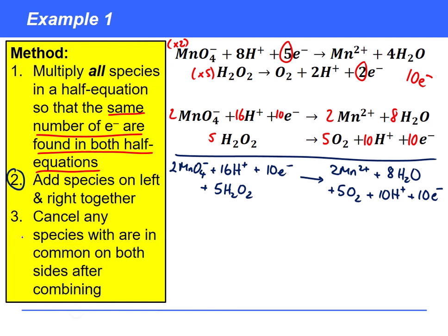So then our final step is to cancel any species which are common on both sides after combining. Now the electrons here will always be in common and you should have exactly the same number of electrons so the ten electrons can be cancelled. But we also see by checking here that actually there's H+ on the left and H+ on the right. So what we're saying here is we need 16, we produce 10, so actually overall we only need 6. So we can lose the 10 here and we can change the 16 to 6.